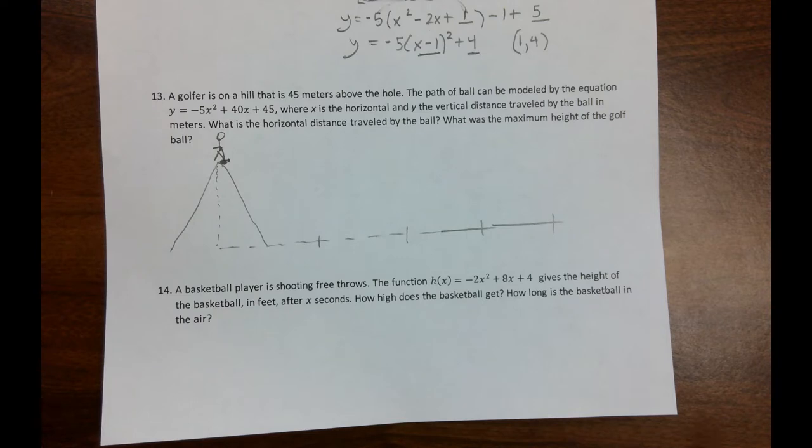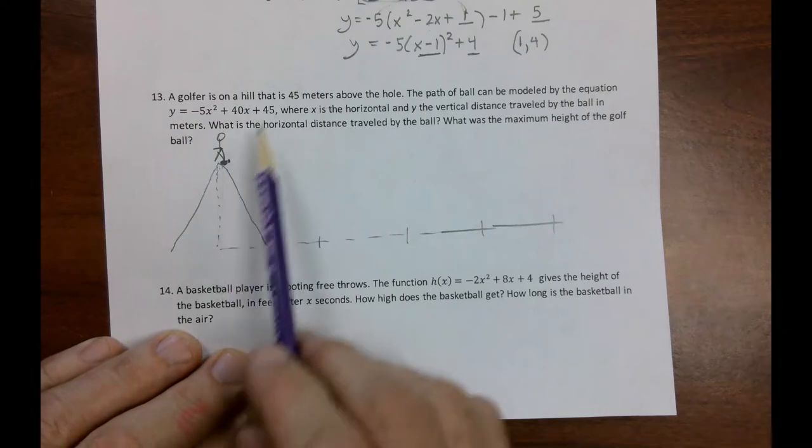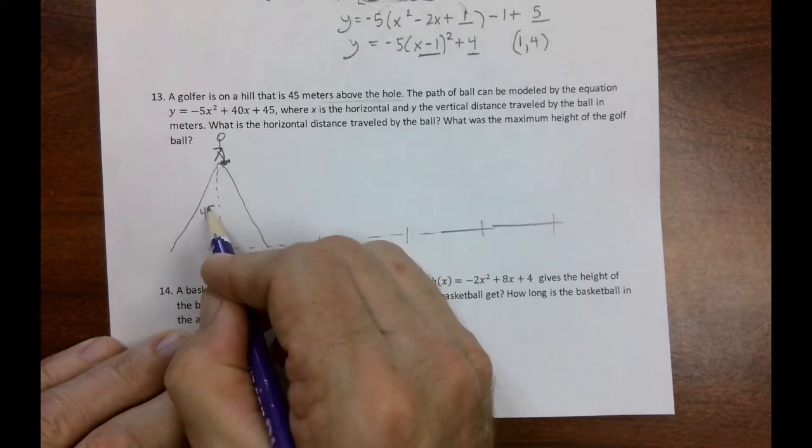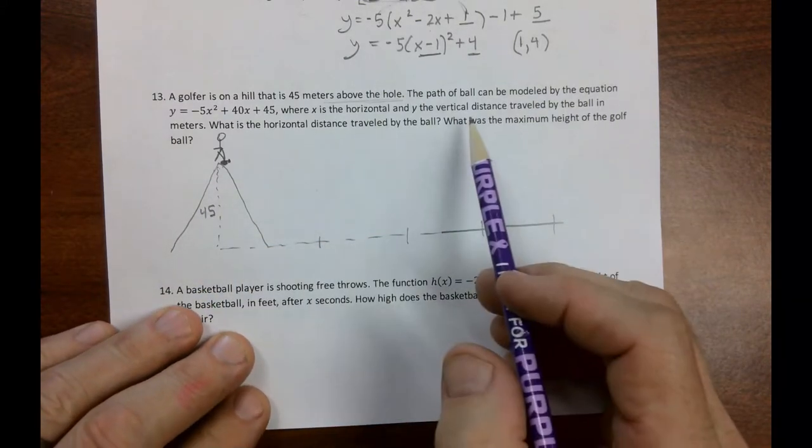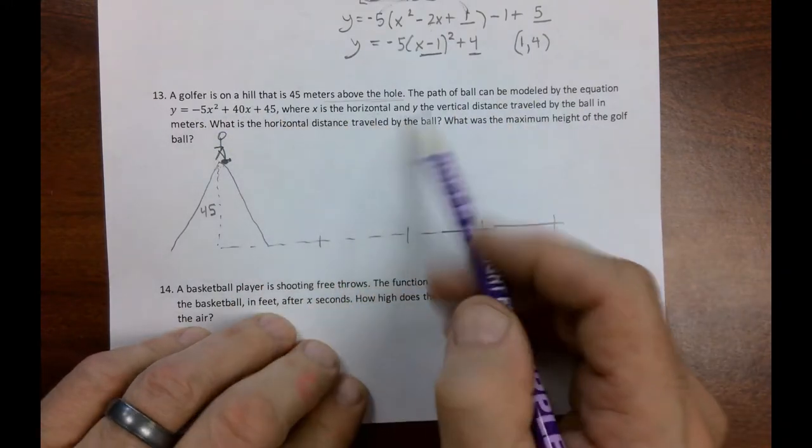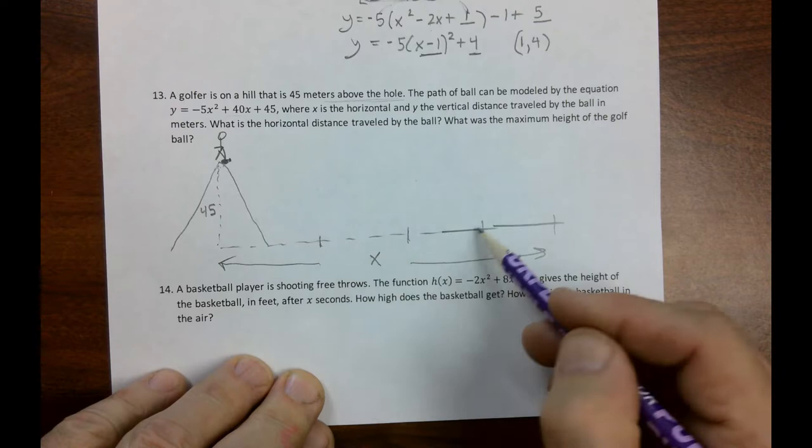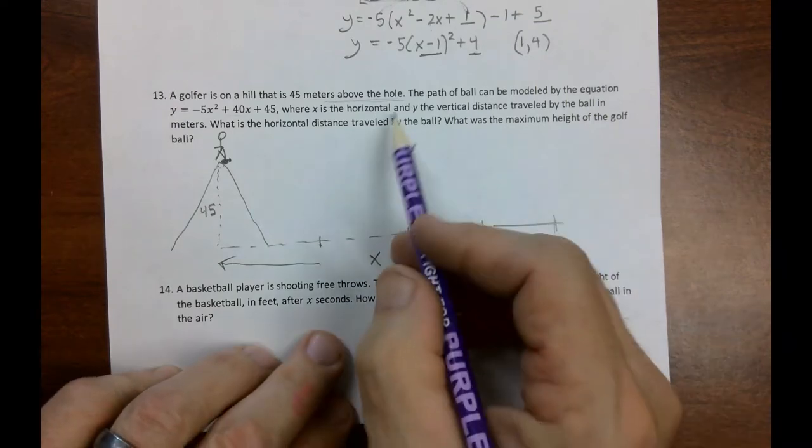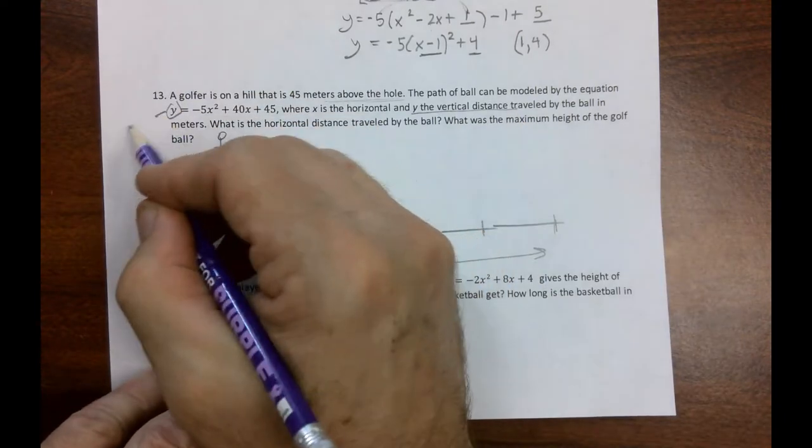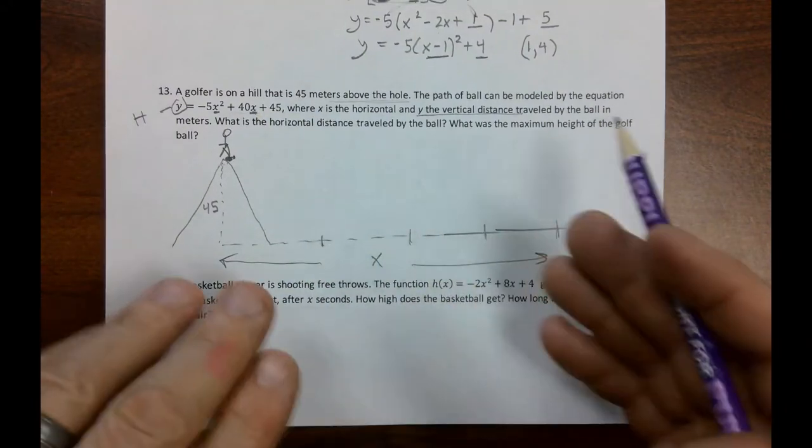Okay, on this next story problem, I've drawn you a little visual. A golfer is on a hill. Looks like a mountain, but it's a hill. 45 meters above the hole. So we know this is 45. Now the problem says the path of the ball can be modeled by the equation. So here it is, where x is the horizontal distance. So this is x. And I put some random tick marks here. We'll talk about that in a minute. x is the horizontal distance. y is the vertical distance. So we see this. That is your height.